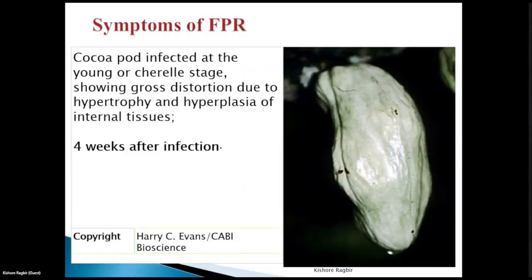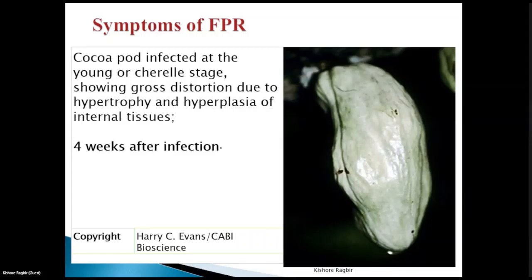For the symptoms of Frosty Pod Rot: this slide shows a young cocoa pod, and after infection of about four weeks you will see gross distortion of the tissues due to hypertrophy and hyperplasia — simply cell division and cell enlargement. This is what persons will see approximately one month after the fungus has infected the young pod.